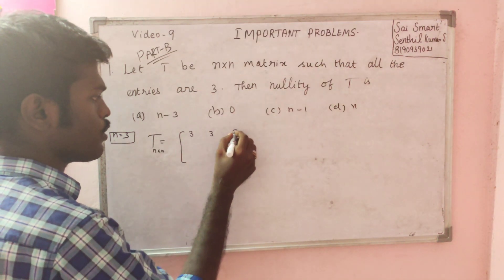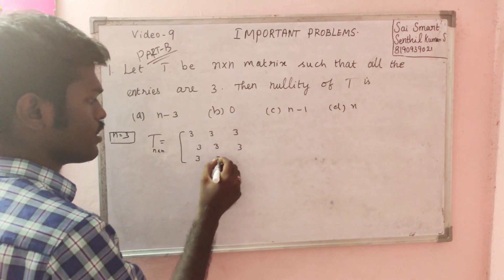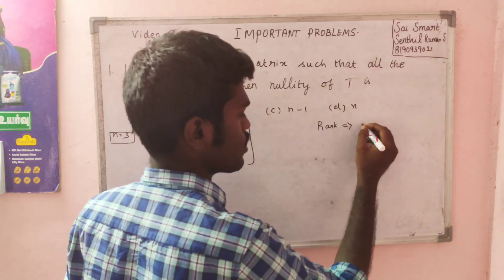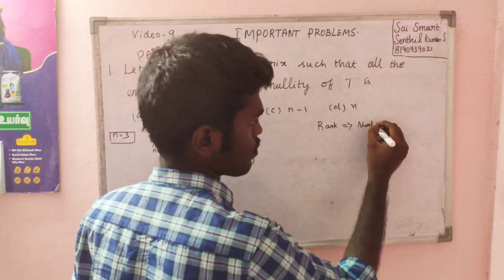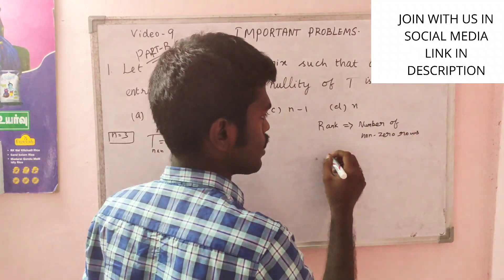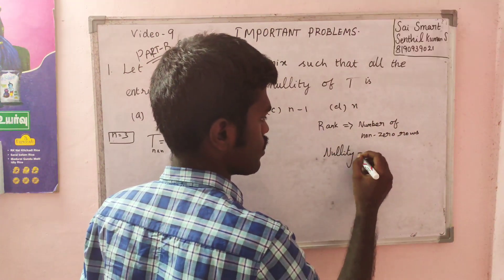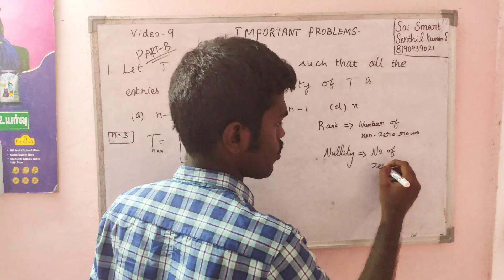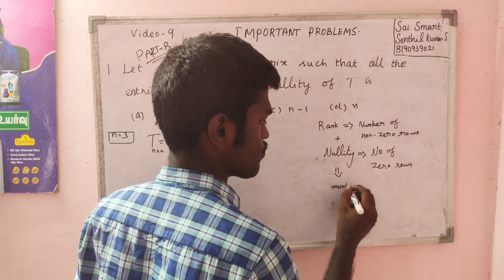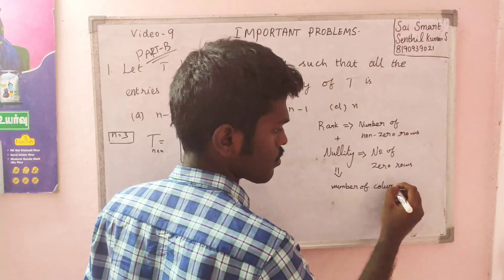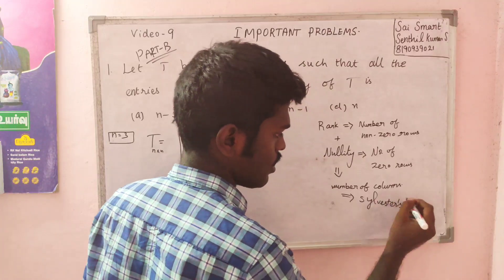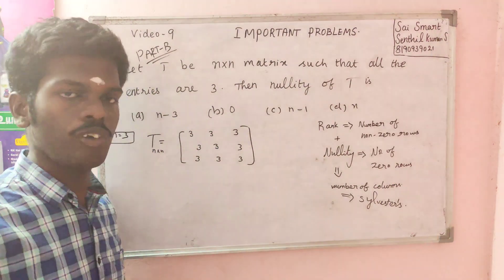A 3 by 3 matrix where every entry is 3. So the number of non-zero rows gives the rank. The number of zero rows gives the nullity. The theorem is Sylvester's rank-nullity theorem: rank plus nullity equals the number of columns.